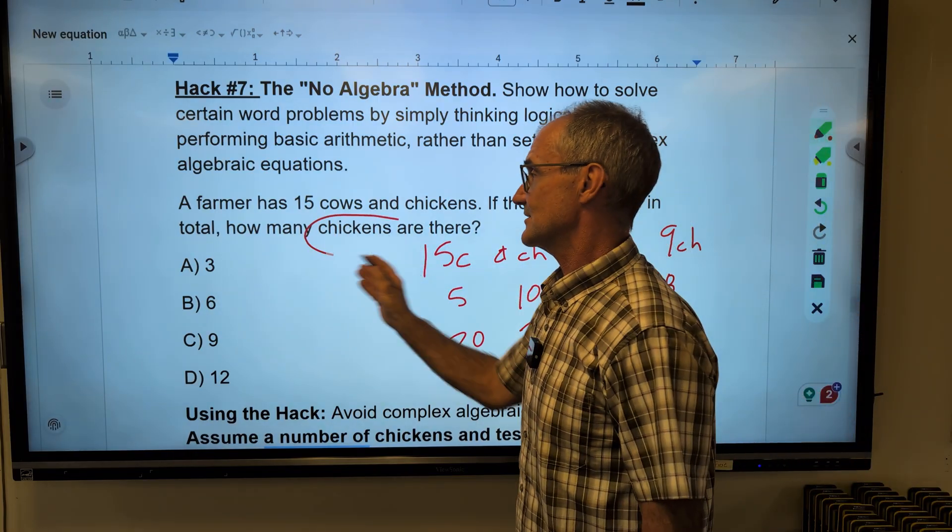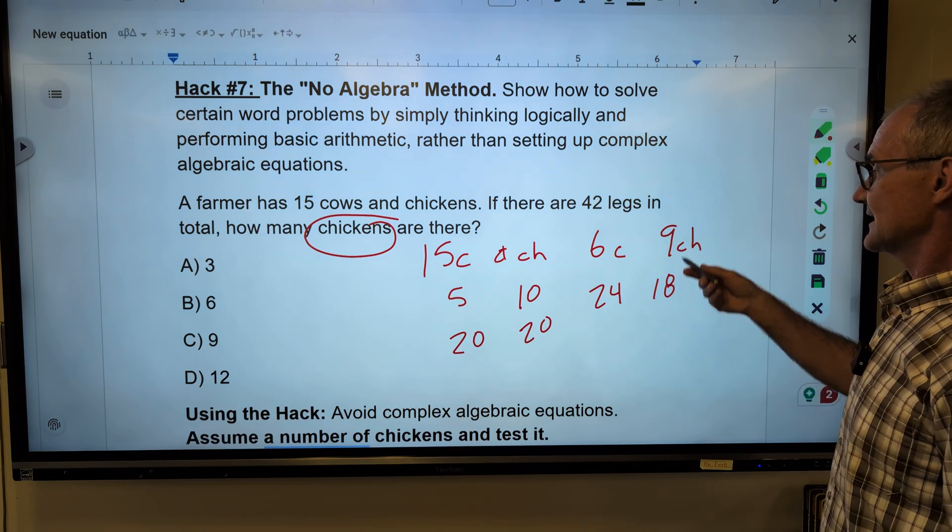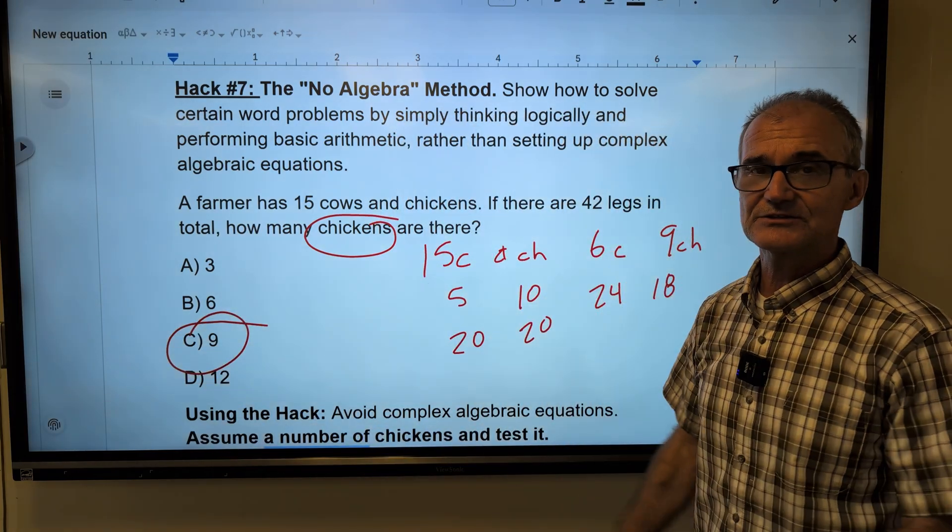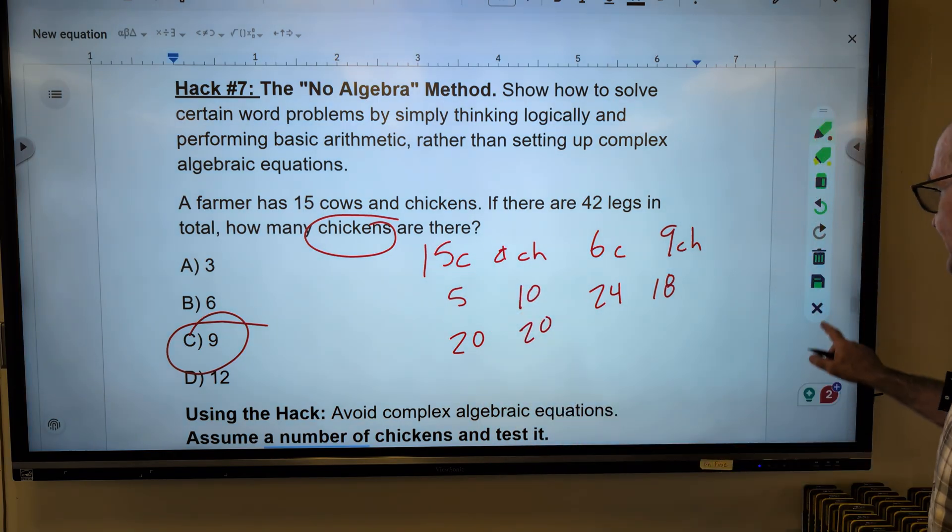It's important. How many chickens are there? Well, we said there are nine chickens. Correct answer, answer C right there. A lot of these you could just kind of reason out by drawing pictures and working on them.